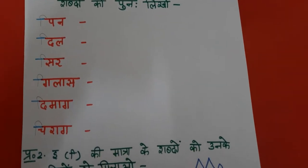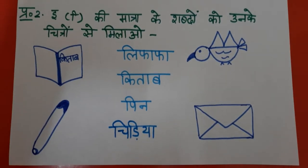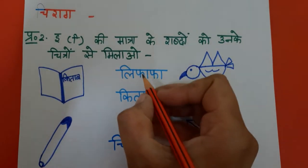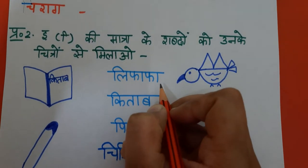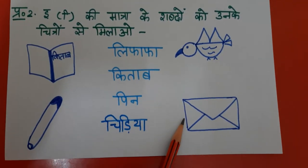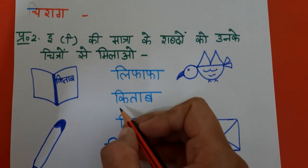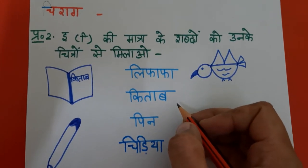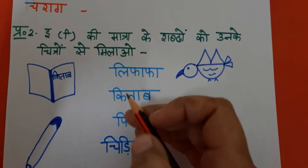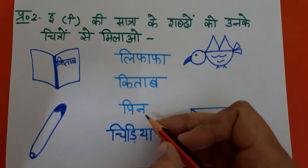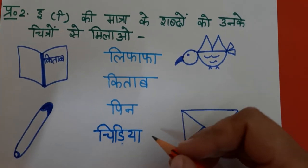Then in question number 2, you have to match your character — it's a matching activity. On the left, the syllables. Kitab — this will be a match. Next, pin — where is the pin? You have to match the pin with the pin.